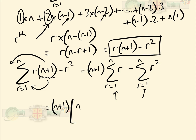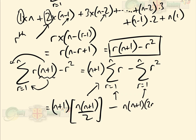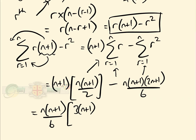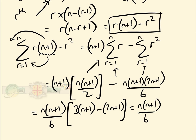The sum of the first n numbers is n(n+1)/2, and the sum of the first n squares is n(n+1)(2n+1)/6. Simplifying everything gives n(n+1)/6 × (3(n+1) − (2n+1)), which equals n(n+1)(n+2)/6.